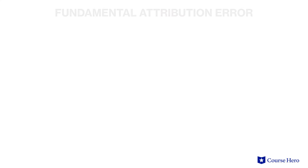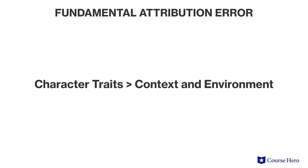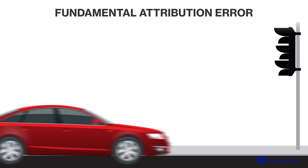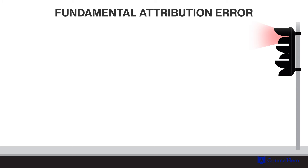The fundamental attribution error occurs when someone weighs a person's potential character traits more highly than context and environment when judging the causes of behavior. For example, people may assume a driver ran a red light because he's a reckless jerk, overlooking the fact that the driver had the sun glaring in his eyes.